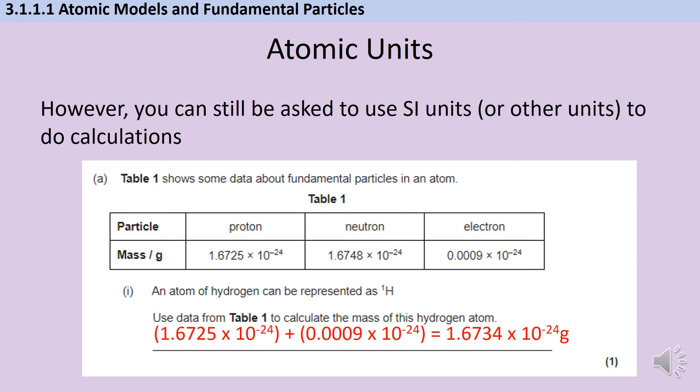Now, the way they could make this slightly more complicated is to give you a more complicated species. So for instance, if they gave you a fluorine molecule, then you would need to know that fluorine has nine protons and therefore nine electrons and 10 neutrons, and that in a fluorine molecule, you're always going to have two atoms. So then you need twice as many of those. And you could see how it could become a slightly longer calculation, but still nothing that you can't handle.